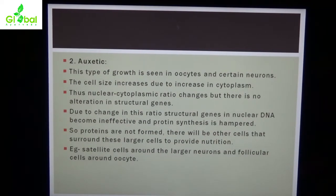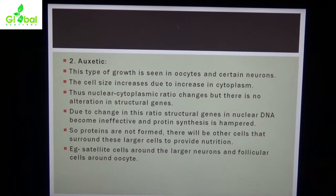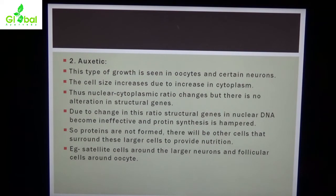The second type is auxetic growth. This type of growth is seen in oocytes and certain neurons. The cell size increases due to increase in cytoplasm, and thus the nuclear-cytoplasm ratio changes, but there is no alteration in structural genes. Other cells surround these larger cells to provide nutrition — satellite cells around larger neurons and follicular cells around oocytes.